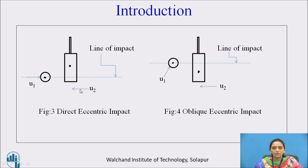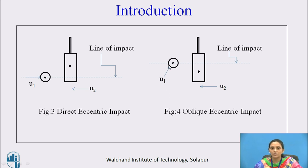Here, the two bodies are moving along the line of impact, but the center of mass of one body is above the line of impact. So it creates eccentricity, and it is called the direct eccentric impact. In figure number 4, one body is not moving along the line of impact — it is moving in some other direction — and the mass center of the other body is below the line of impact. So it is called the oblique eccentric impact.